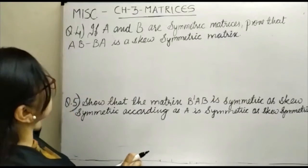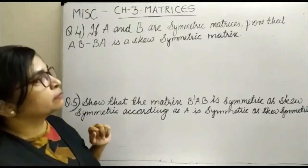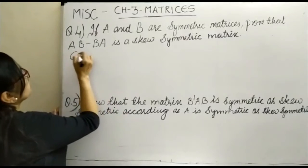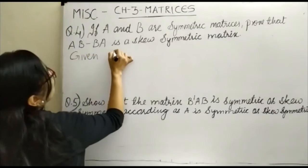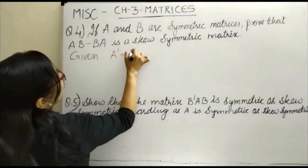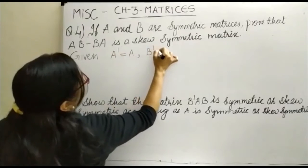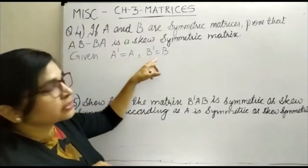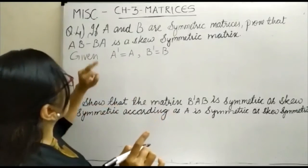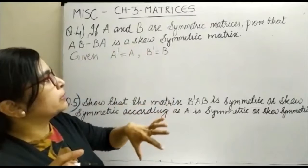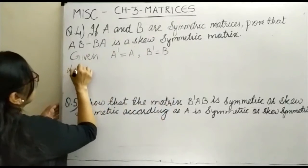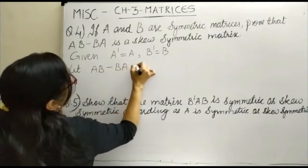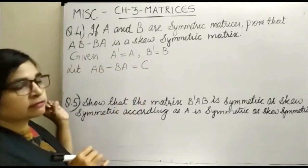Let us start. Question number 4: if A and B are symmetric matrices, it is given that A transpose equals A and B transpose equals B. We need to prove that AB minus BA is a skew symmetric matrix. So let AB minus BA equal C, where C is another matrix.